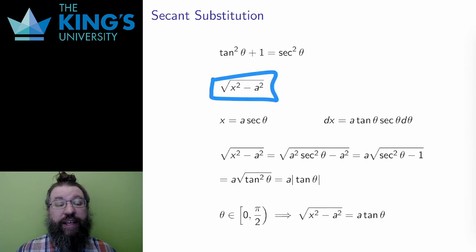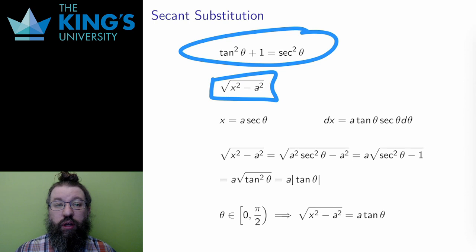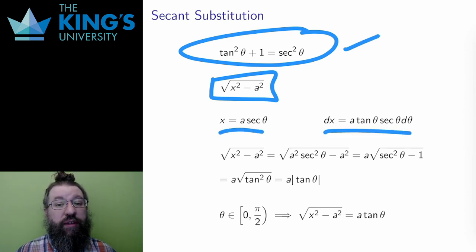The last pattern is the difference, x squared minus a squared with the x squared first. I'm going to use the same trig identity with tangent and secant, but the substitution is now x equals a secant theta, with dx equals a tan theta secant theta d theta. Then I'll go through the same steps. In this case, the square root turns into the tangent and then disappears.